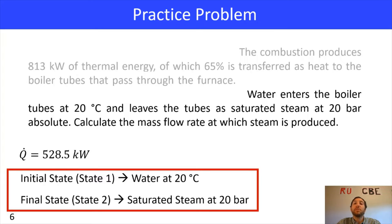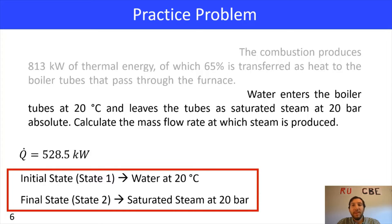To get those enthalpy values, there are tables called steam tables which have a lot of information on water. Within that information they've got enthalpy, internal energy, and specific volume for water at a variety of states. There are a few different types of tables depending on what state you have — there are water tables and also steam tables. Within the tables there's a little bit of overlap between some of the water information and the steam information.